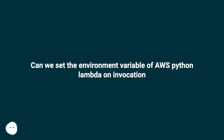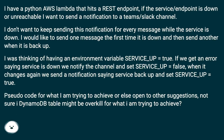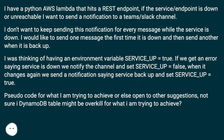Can we set the environment variable of AWS Python Lambda on invocation? I have a Python AWS Lambda that hits a REST endpoint. If the service or endpoint is down or unreachable, I want to send a notification to a team Slack channel. I don't want to keep sending this notification for every message while the service is down. I would like to send one message the first time it is down and then send another when it is back up.